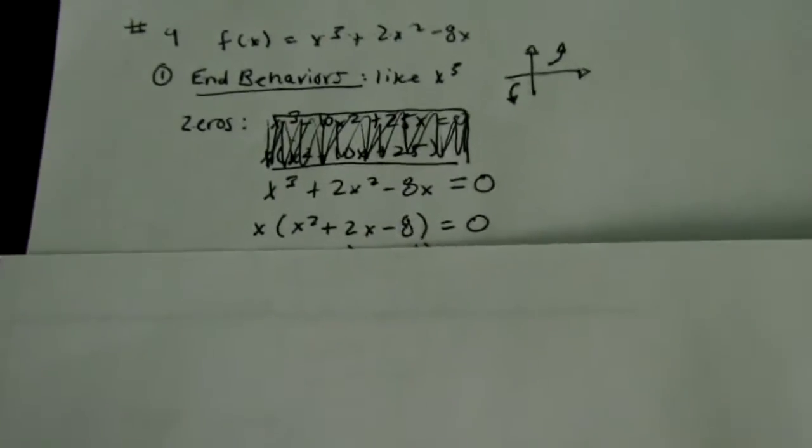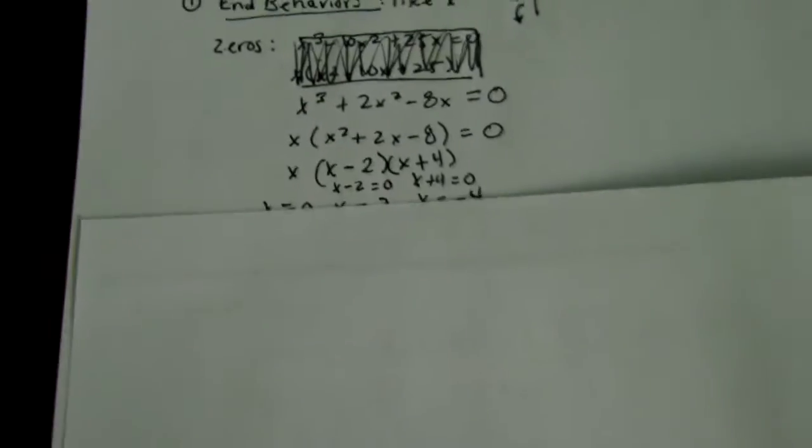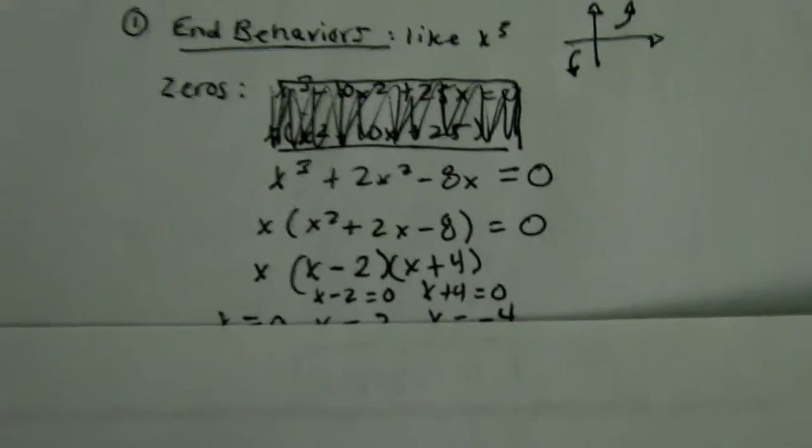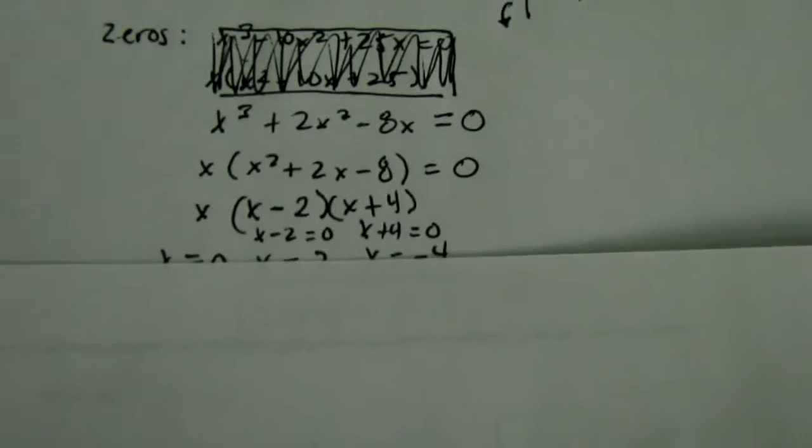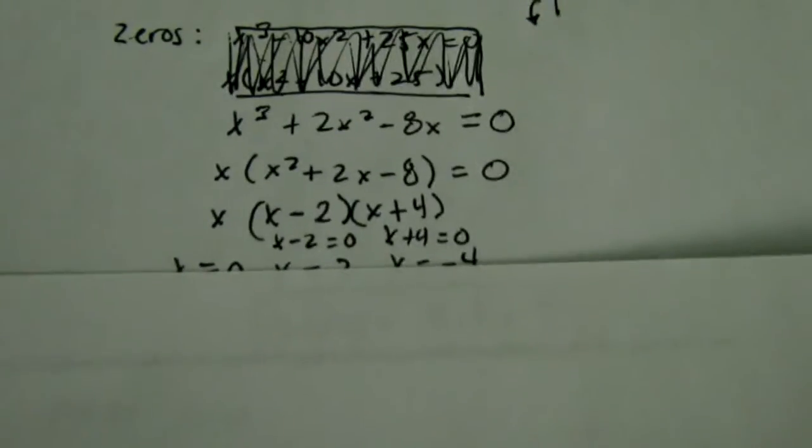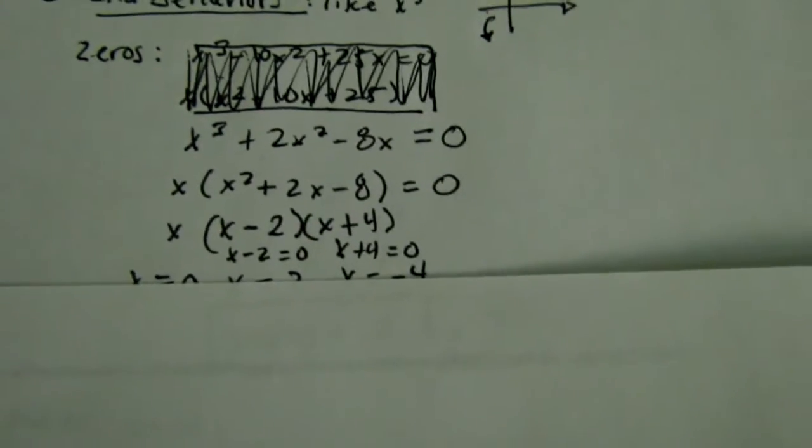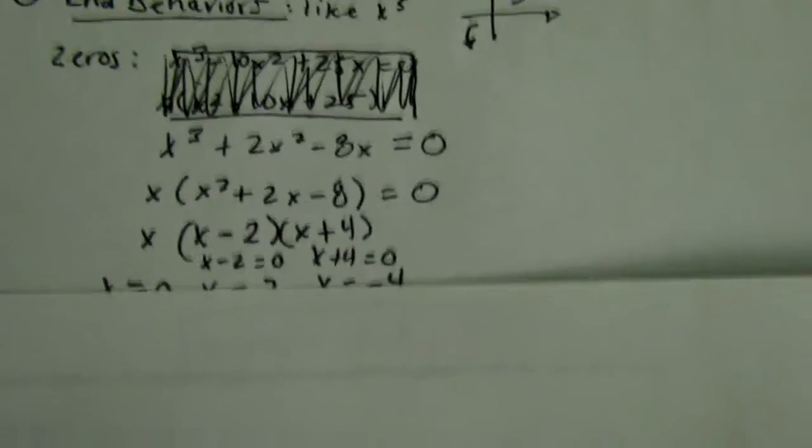Next step is to factor out x since there is x in every exponent. And we get x times x² plus 2x minus 8.